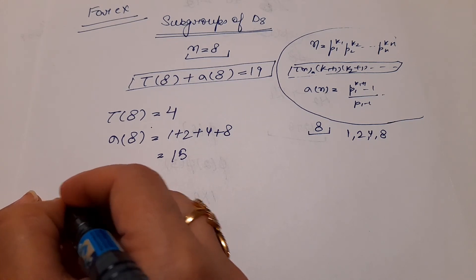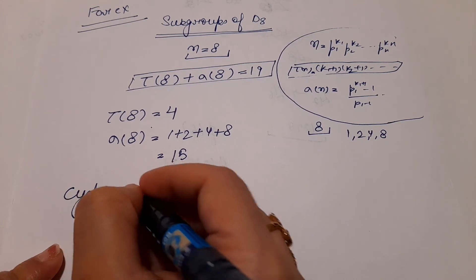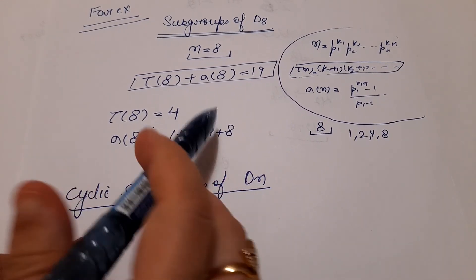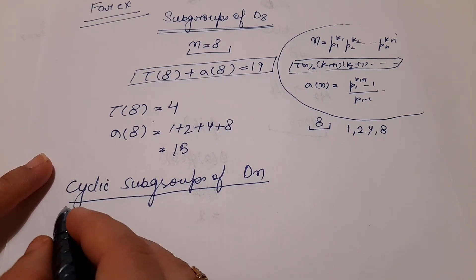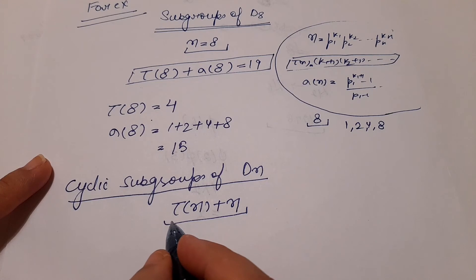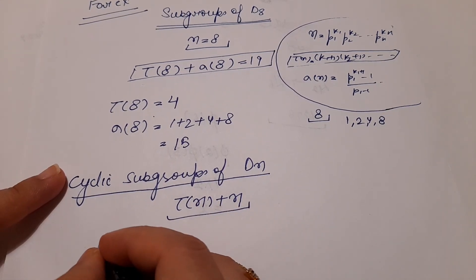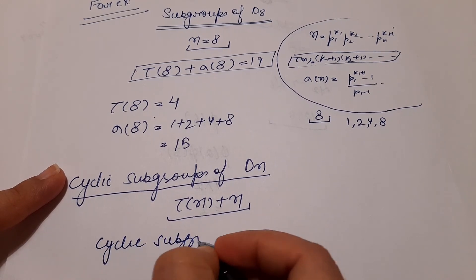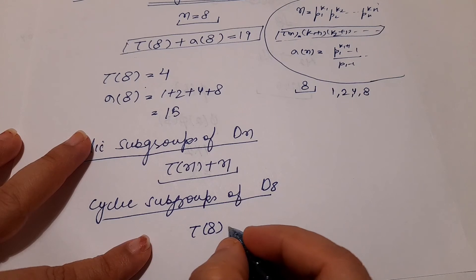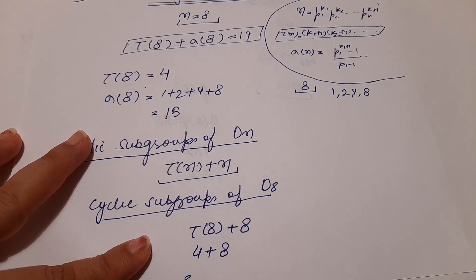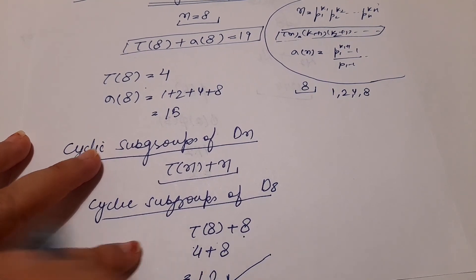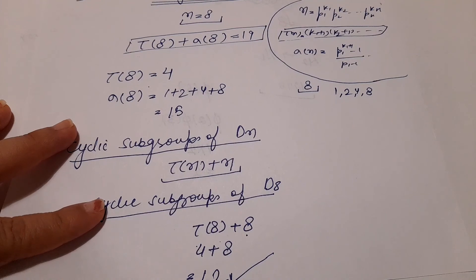Next, for total number of cyclic subgroups only: the formula is τ(n) plus n. So total cyclic subgroups of D8 equals τ(8) plus 8 equals 4 plus 8 equals 12. So D8 has 12 cyclic subgroups and 19 total subgroups.